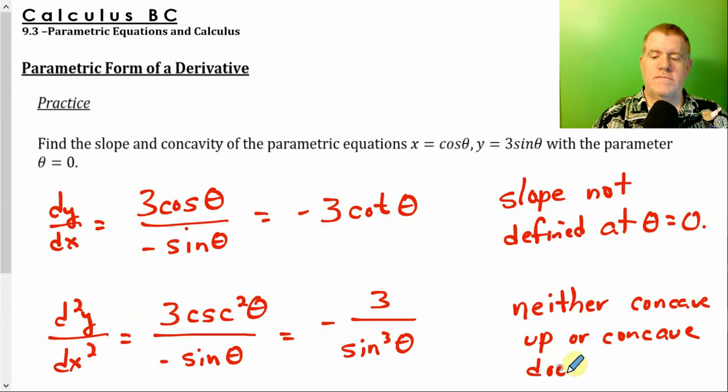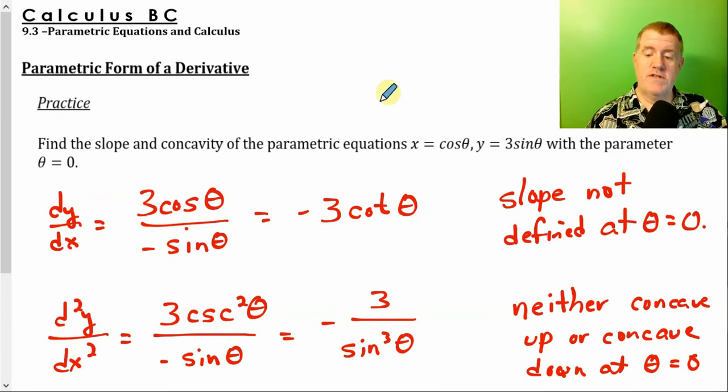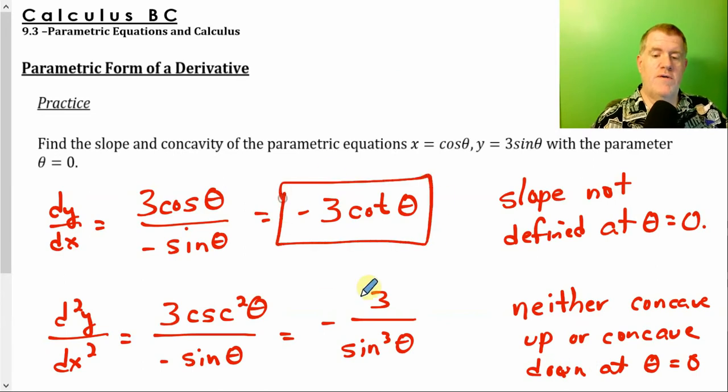That's kind of a bummer of a question. It's like, hey, all this worked for nothing. Well, it's not nothing. We know that the slope is not defined, and we know it's not concave up or concave down. But we do know our first derivative is this function, and we do know our second derivative is this function. There you go. Derivatives with parametrics.